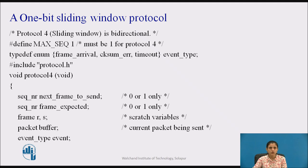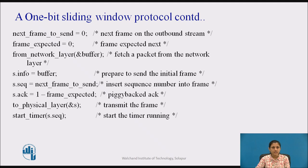Let us see the working of the 1-bit sliding window protocol. Here, next_frame_to_send is a sequence number, and frame_expected is also a sequence number — both can be either 0 or 1. R and S are variables of type frame. Buffer is a variable of type packet. Initially, next_frame_to_send and frame_expected are initialized to 0. A packet is fetched from the network layer into buffer, and a frame is constructed: S.info = buffer, S.sequence_number = next_frame_to_send. The constructed frame is then sent to the physical layer.